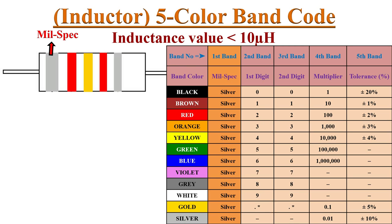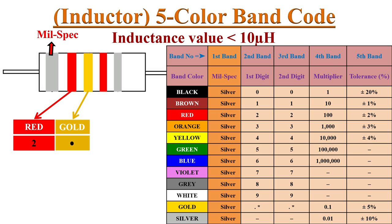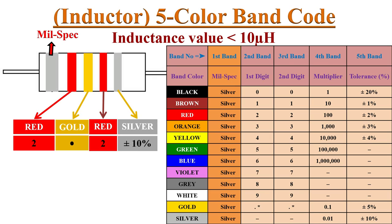For example, the second band is red — its value is 2. The third band is gold, so it is a decimal point. The fourth band is red — also a digit value of 2. The fifth band is silver, giving a tolerance of plus or minus 10%. That gives an inductance value of 2.2 micro-Henrys with plus or minus 10% tolerance.